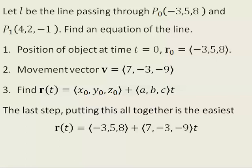The last step, putting all this together, is the easiest. r is equal to r-naught plus v times the parameter t.